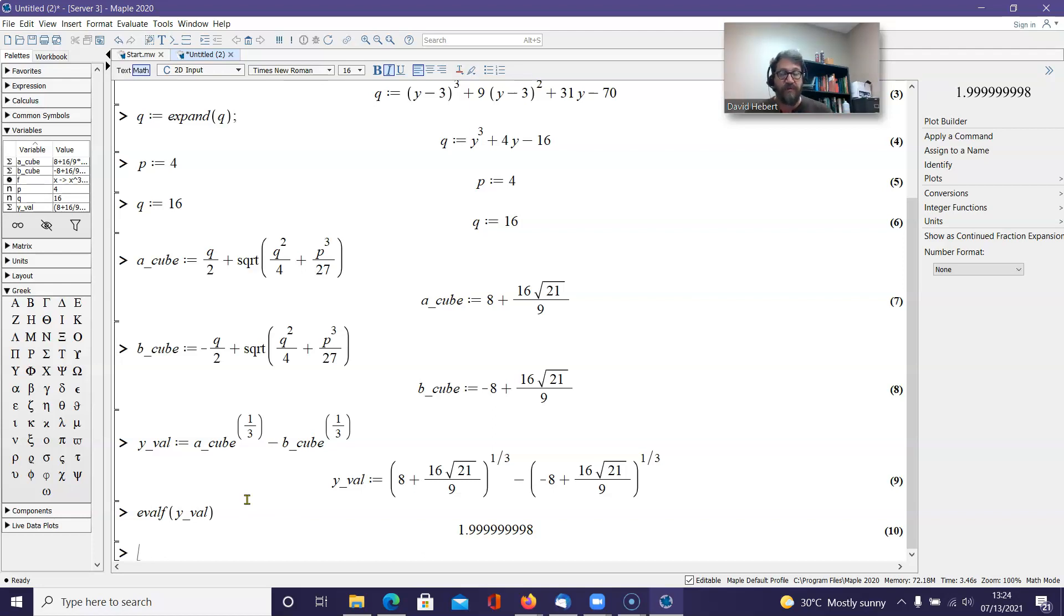And that number looks a lot like 2. As a matter of fact, in computer language, I would call this 2. Let's look up here where we have our cubic equation in terms of y. If y cubed, and if y is 2, y cubed would be 8. 4 times 2 would be 8. And 8 and 8 would make 16. So when I take 16 from it, I get 0, which is what I'm after.